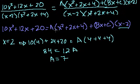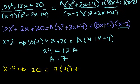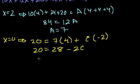Now we know A is 7. We can make the b disappear by picking x equal to 0. With x equal to 0, the left side is just 20. The right side gives 7 times (0 plus 0 plus 4) plus (b times 0 plus c) times (0 minus 2), which simplifies to 28 minus 2c. So 20 equals 28 minus 2c, giving minus 8 equals minus 2c, and c equals 4.